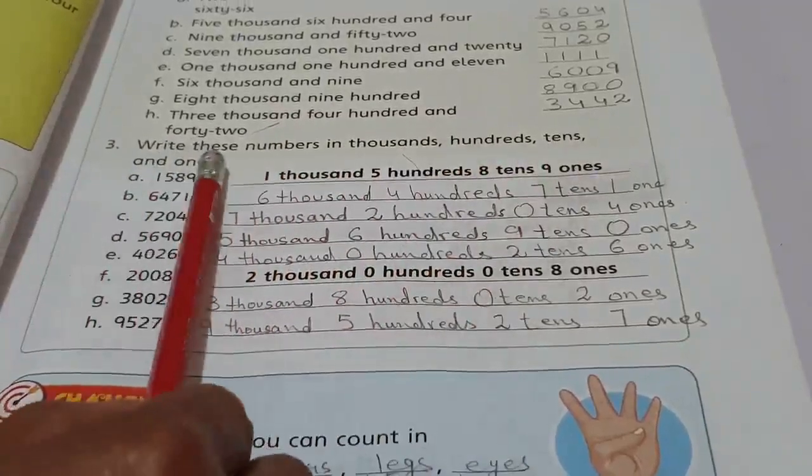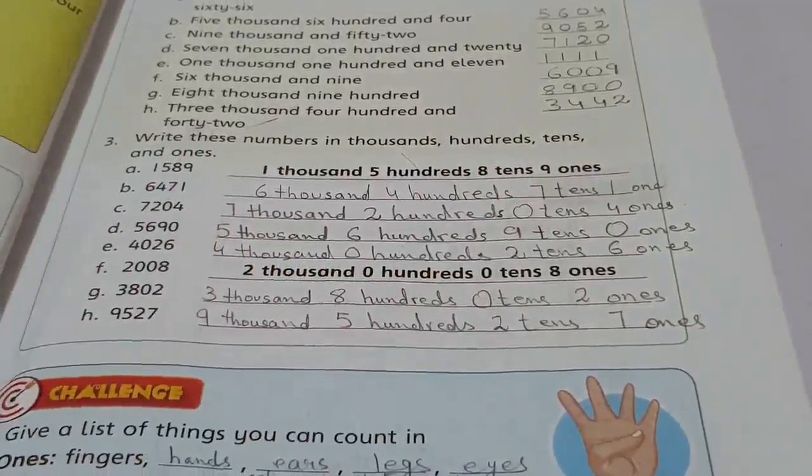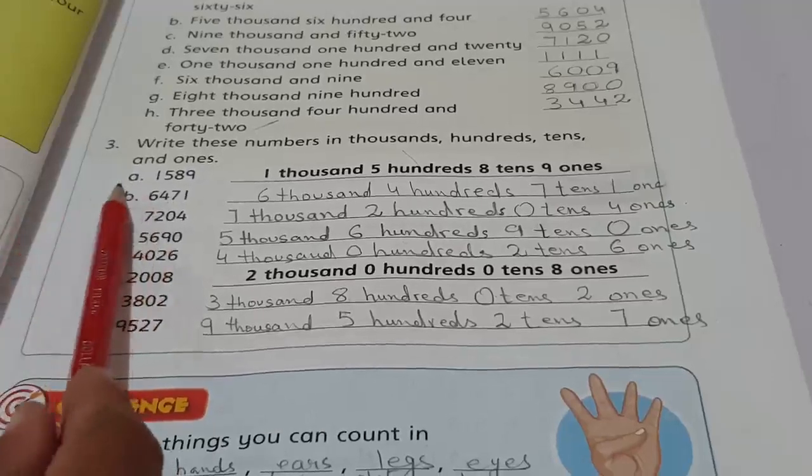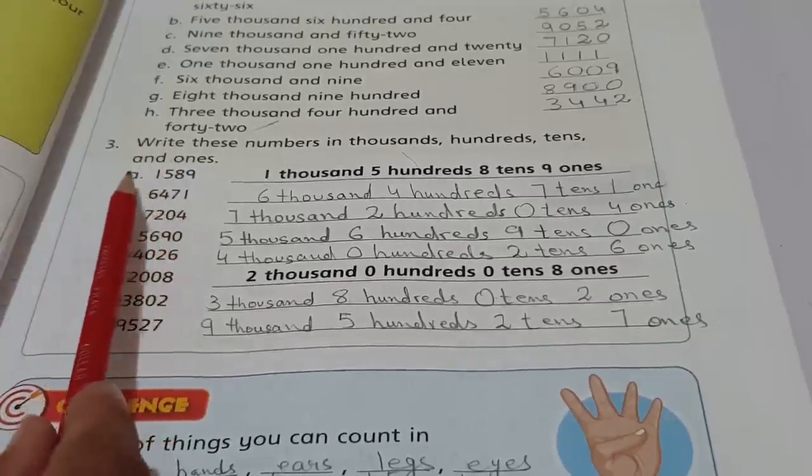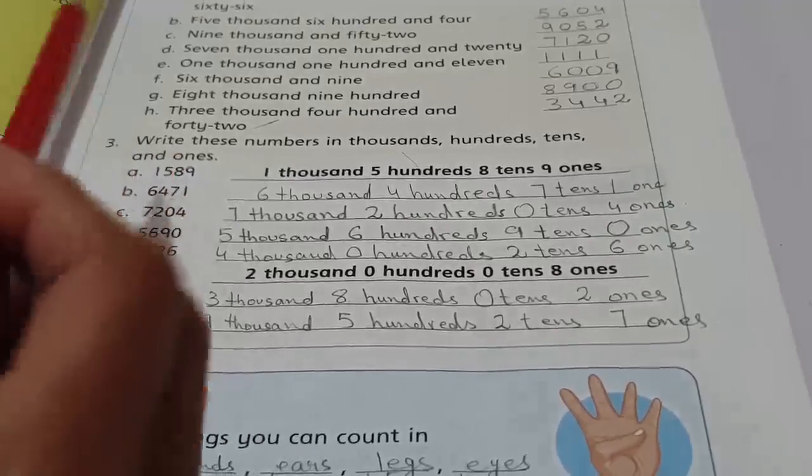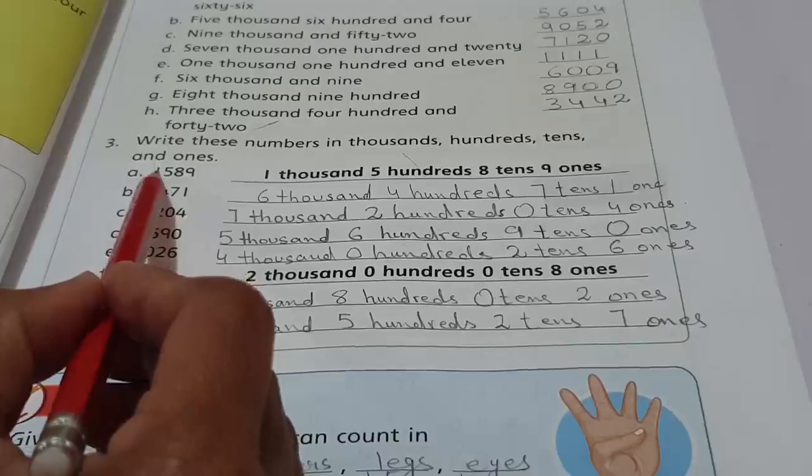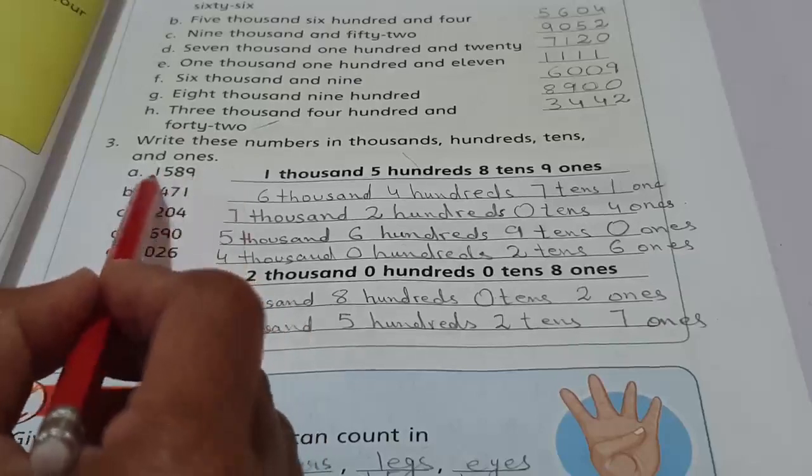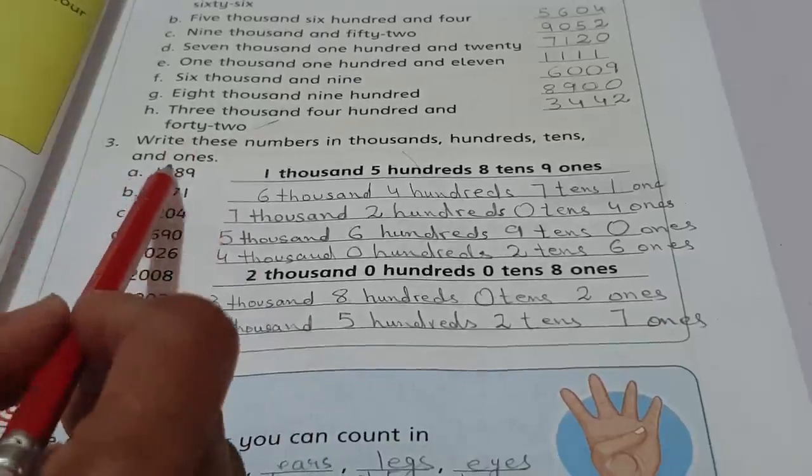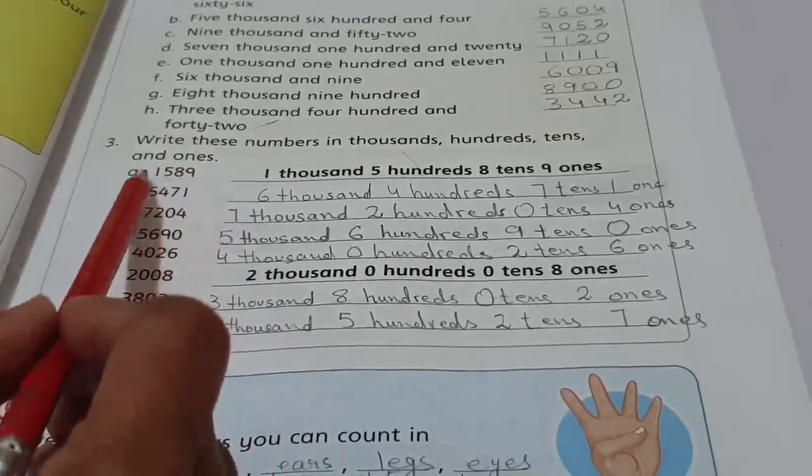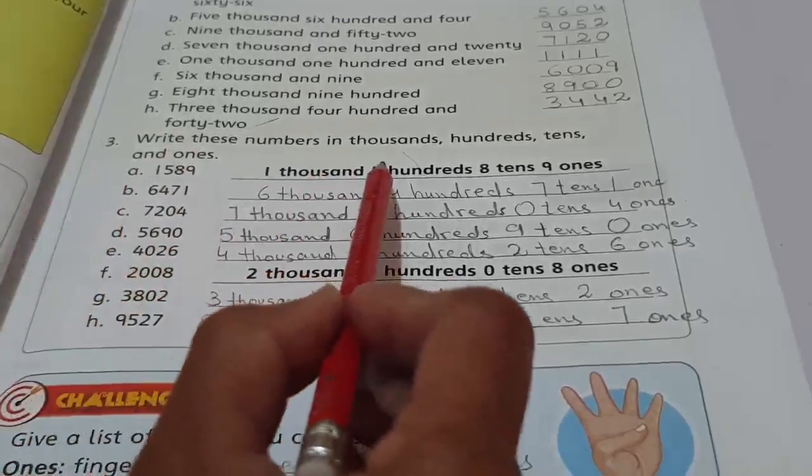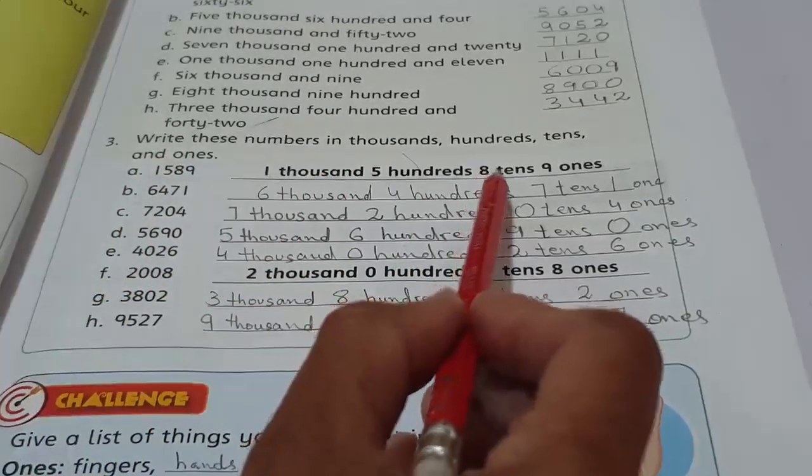Come to question number 3: Write these numbers in thousands, hundreds, tens and ones. As we have read, we have done ones, tens, hundreds, thousands in our previous lecture. Now we will represent the place values of these numbers.